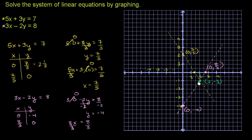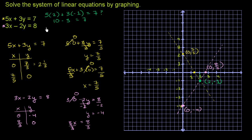That's what we got just by eyeballing it, and these are hand-drawn graphs — not very precise. So let's verify that (2, negative 1) satisfies both equations. Plugging into the first equation: 5 times 2 plus 3 times negative 1 equals 10 plus negative 3, which is 10 minus 3 equals 7. Yes, it does equal 7, so (2, negative 1) definitely satisfies that equation.